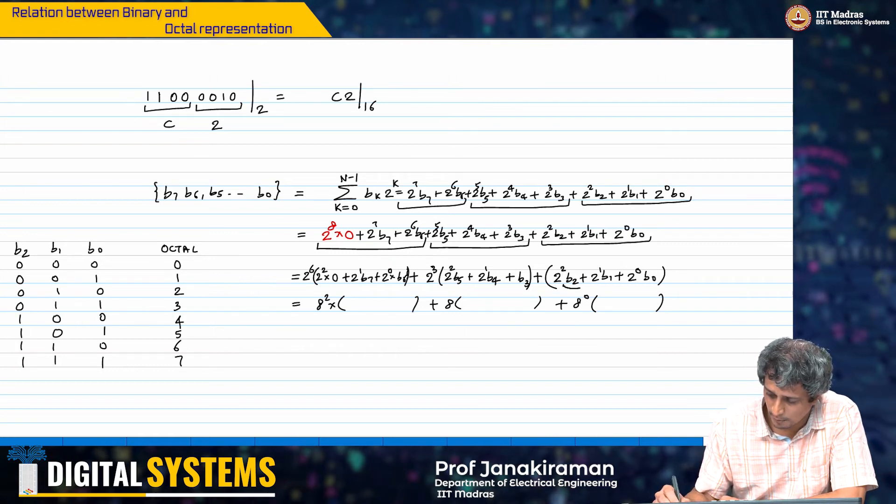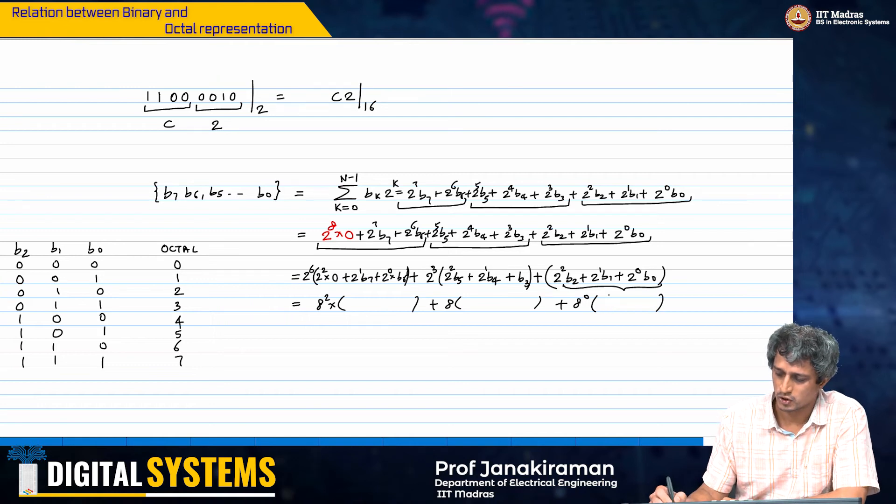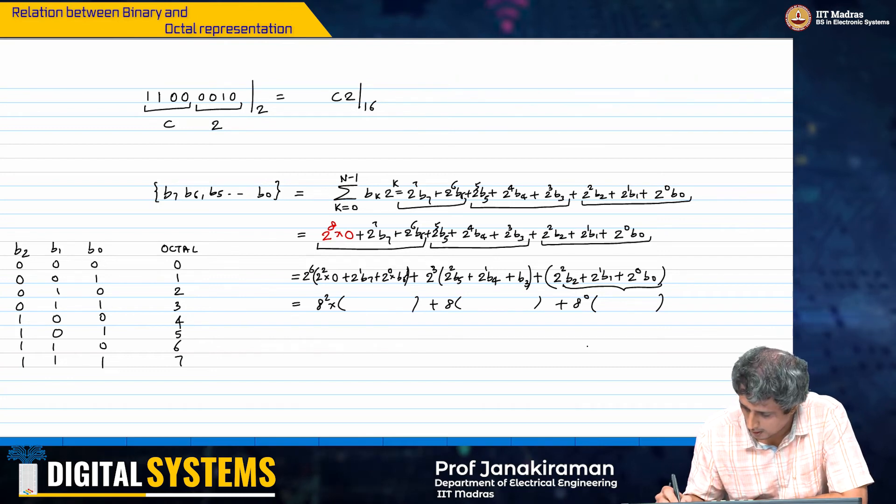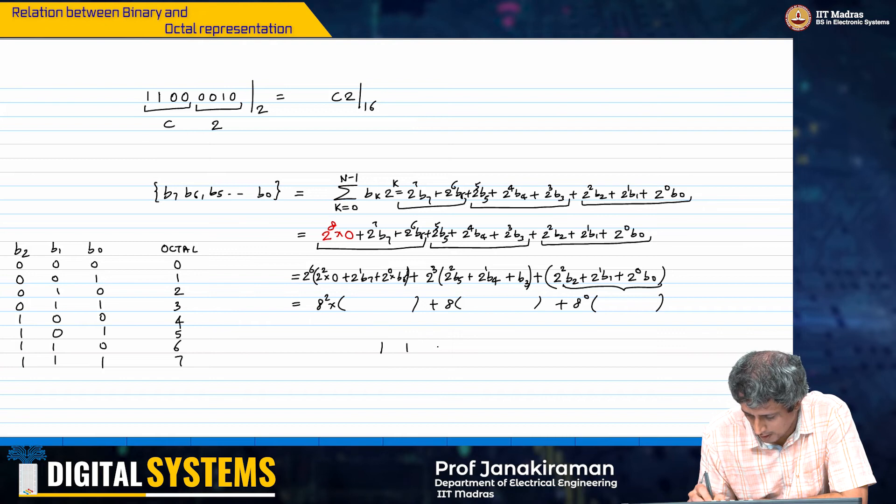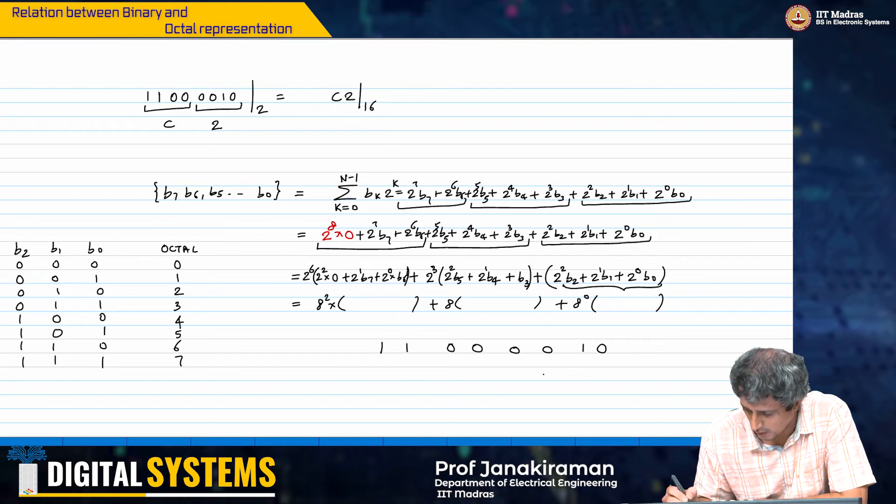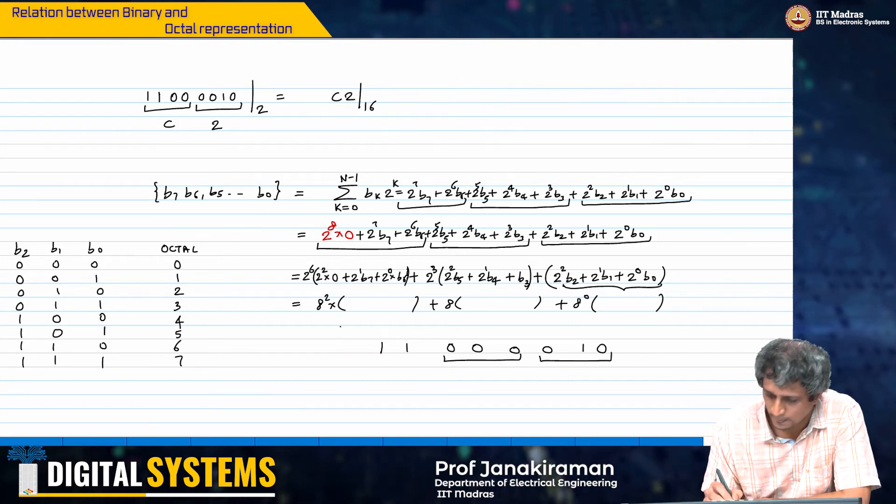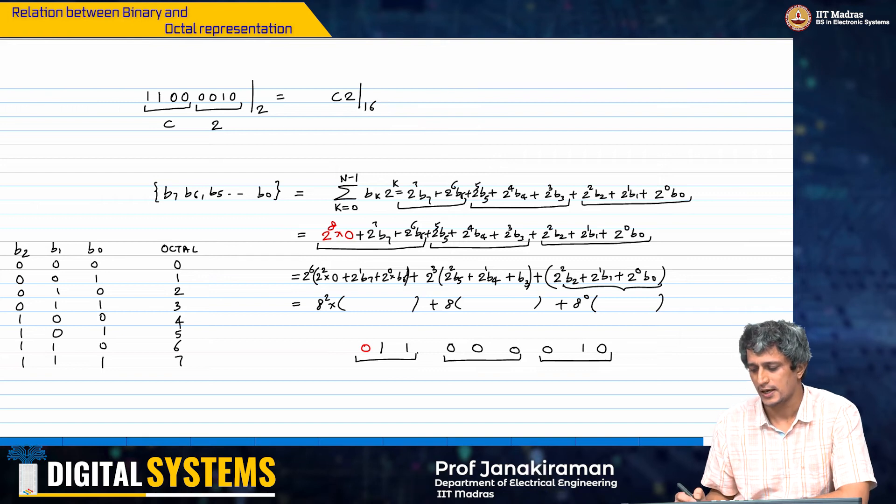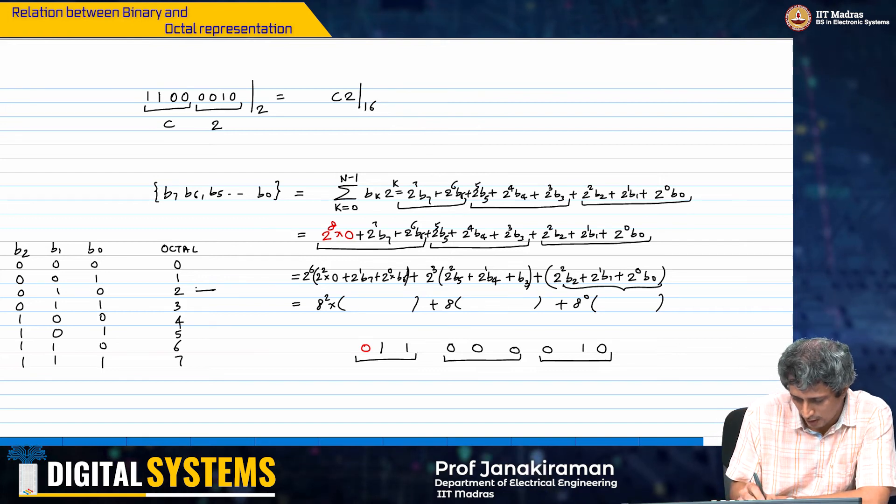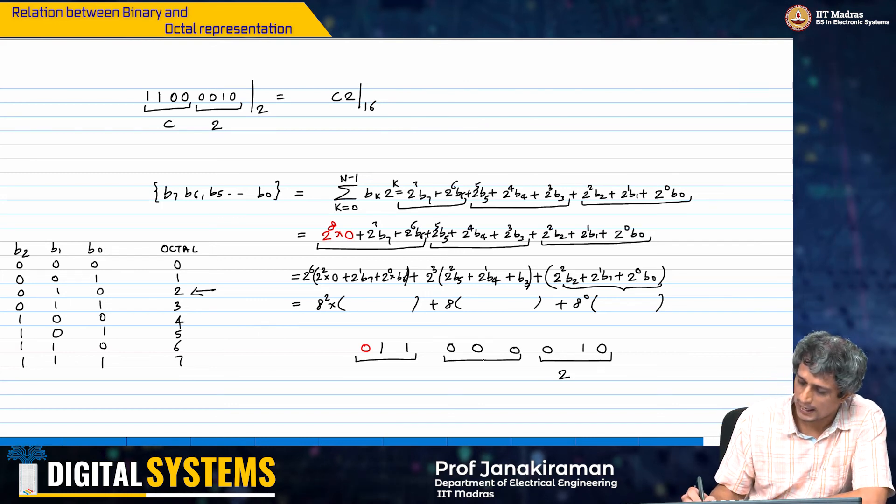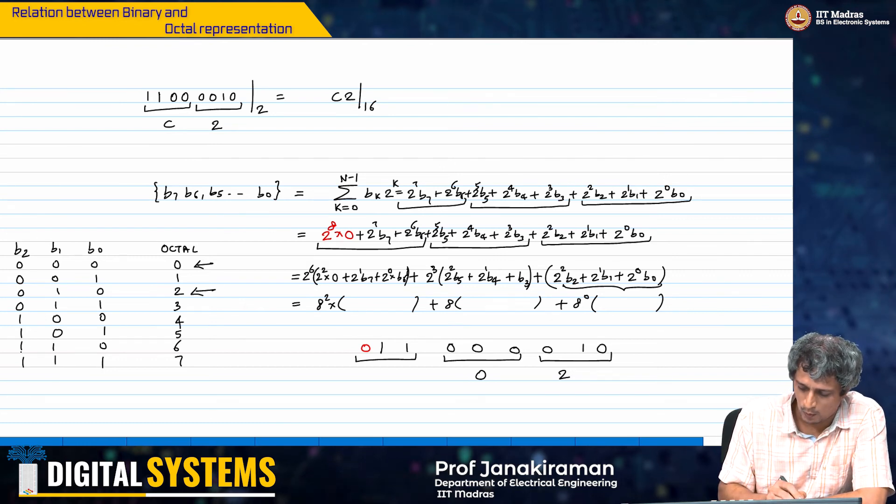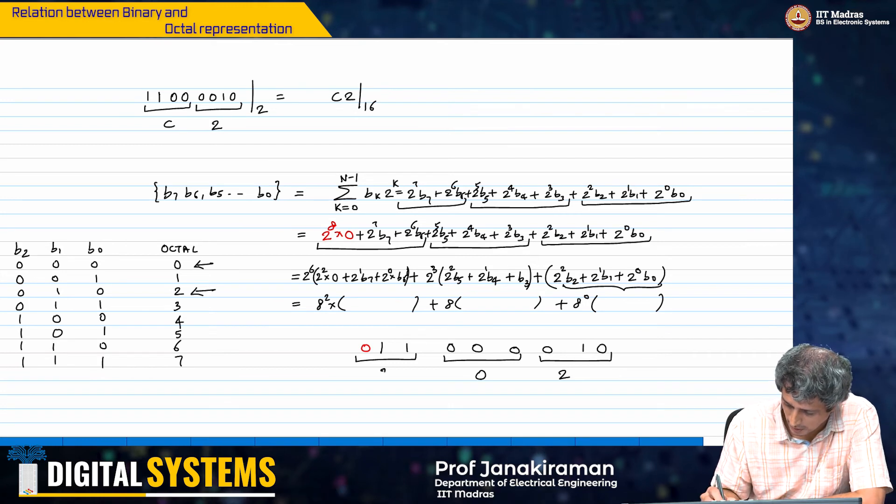You take this and replace it by its octal. Let us look at this example again very specifically. I am going to look at 1 1 0 0 0 0 0 1 0. I am going to group in groups of 3 and I am going to add the 0 here so that I can complete and make it 9 bits and get groups of 3. 0 0 1 0 is here and therefore, this is 2 and 0 0 0 obviously is 0, 0 1 1 is here which is 3. So this is equal to 3 0 2 in octal.